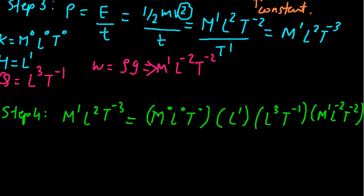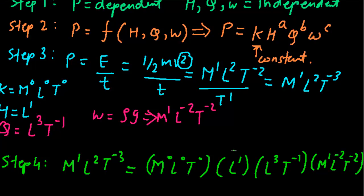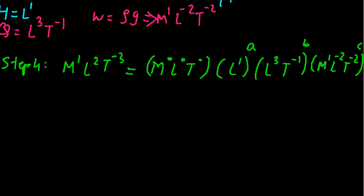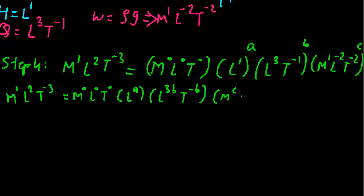Let us go back and see the exponentials. H is raised to the power of a, so this will be raised to the power of a. Q is raised to the power of b, and this is raised to the power of c. So you need to write the powers in this case also: L raised to a, L raised to 3b, T raised to minus b, m raised to c, L raised to minus 2c, and T raised to minus 2c.